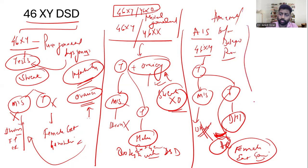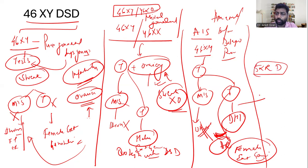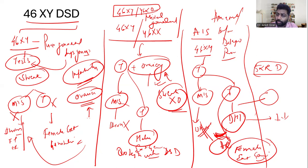Another 46XY DSD scenario is 5-alpha reductase deficiency. In this condition everything is the same — the receptors are working — but the patient will still have female external genitalia because dihydrotestosterone is deficient due to the deficiency of the enzyme responsible for its formation. These patients will also have absence of uterus and will be raised as a female child.